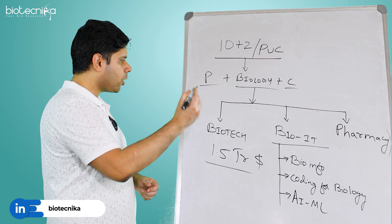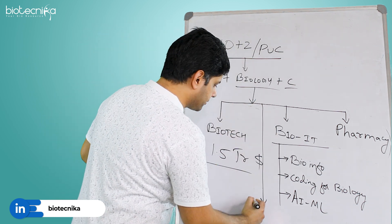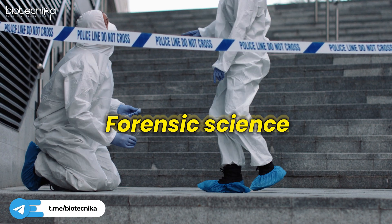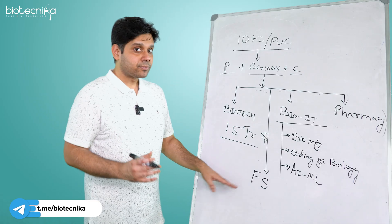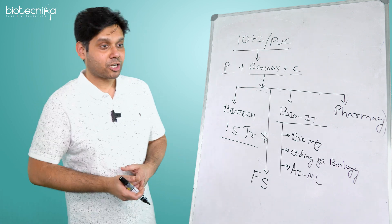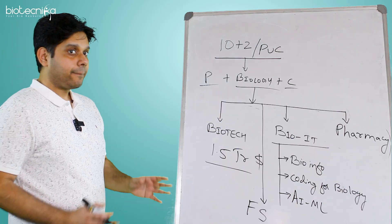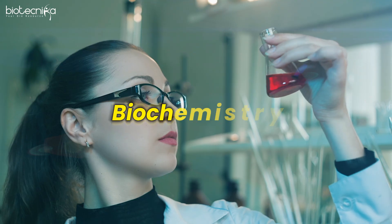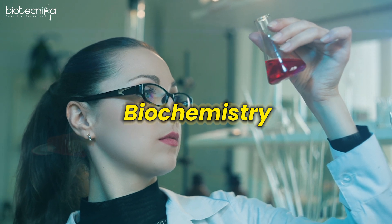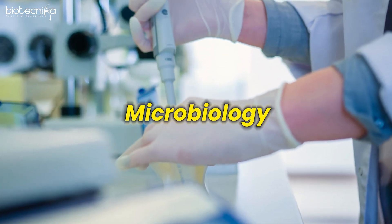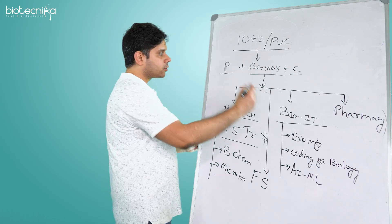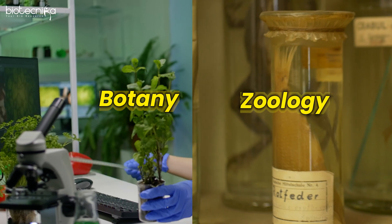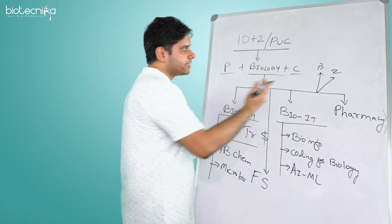Apart from that, we also have multiple other things such as forensic science. You can work into various forensic science labs across the country and detect crimes if you want to be a Sherlock Holmes. Under biotechnology itself, you have biochemistry, microbiology. You can also go for pure sciences such as botany, zoology, but I will not advise you unless your aim is to get into UPSC because it doesn't help you there.